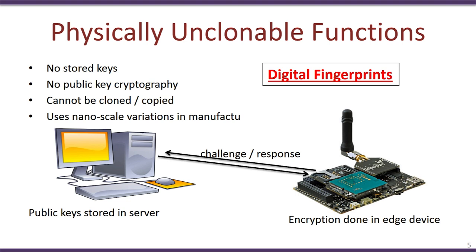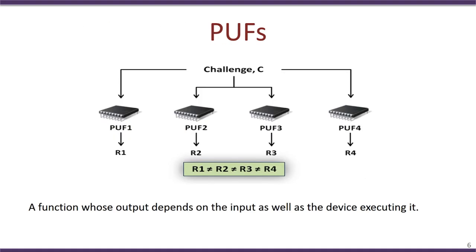What are physically unclonable functions? Essentially, PUFs are something like digital fingerprints which can uniquely identify a device. They are based on nanoscale variations present during the manufacture of the device. Basically, a PUF is a function — it takes an input known as a challenge and provides an output known as the response. However, what makes it different from other functions is that the response depends not only on the input challenge but also on the specific device where the function is executed.